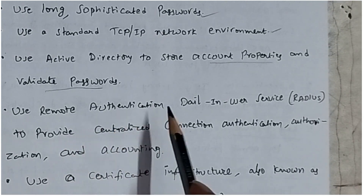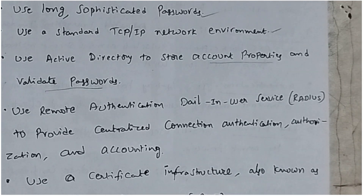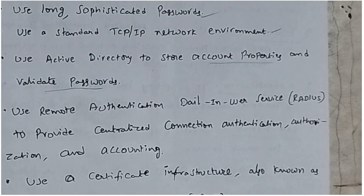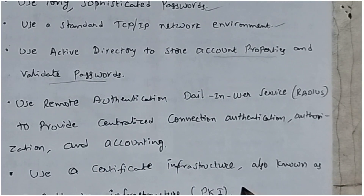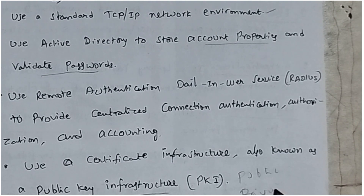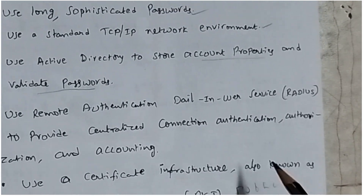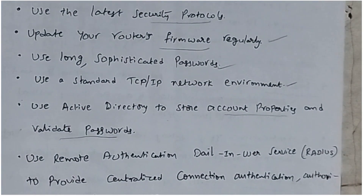Also use Remote Authentication Dial-In User Service, RADIUS. You can also use certificate infrastructure, also known as Public Key Infrastructure, PKI, which uses multiple keys — a public key and a private key. These are the steps to provide wireless LAN security.